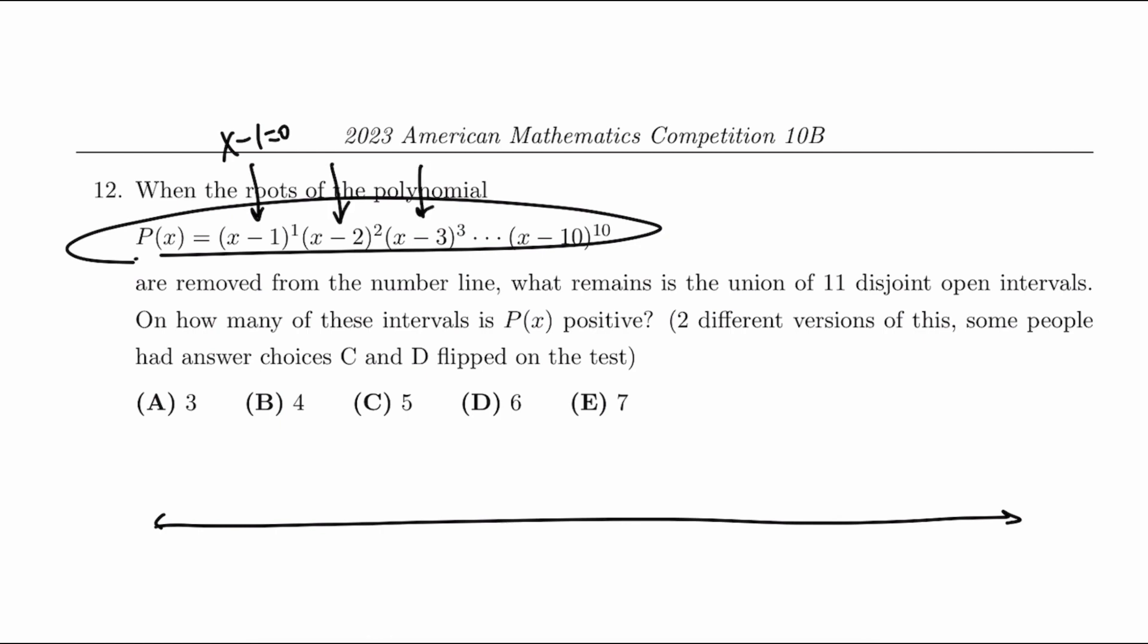These are basically telling us what our roots are. So our roots are 1, 2, 3, 4, 5, 6, 7, 8, 9, and 10.